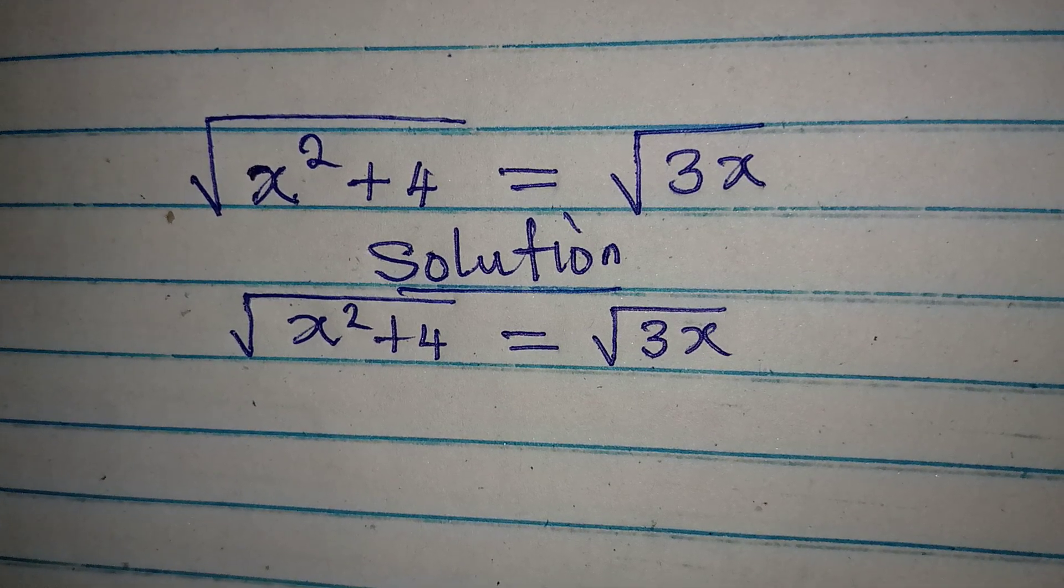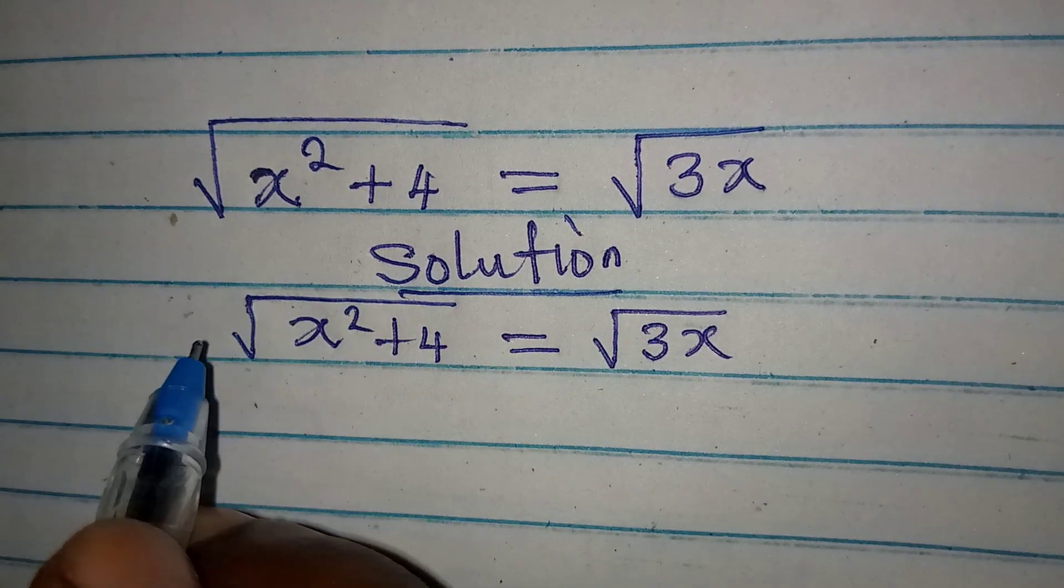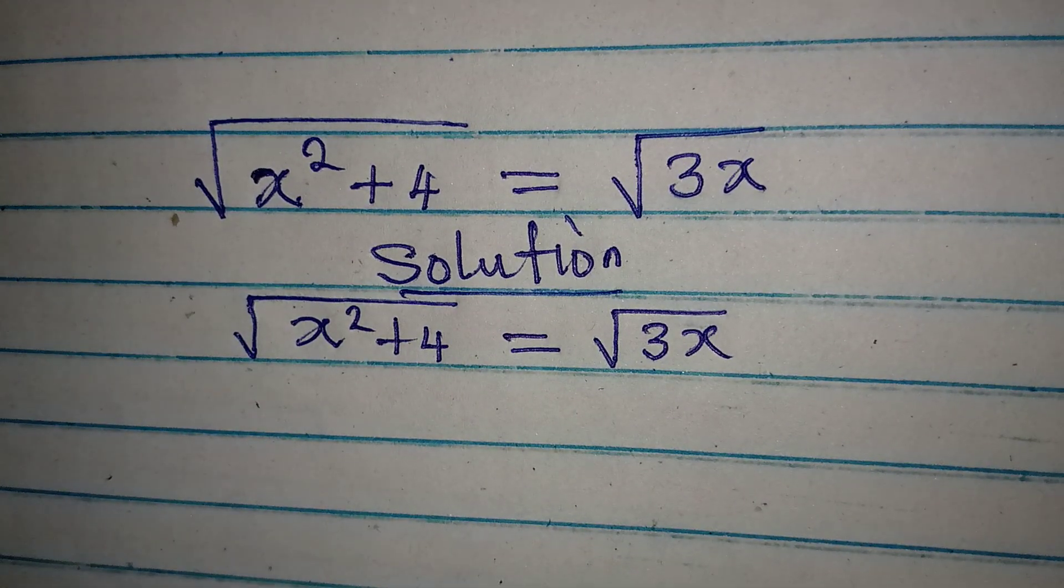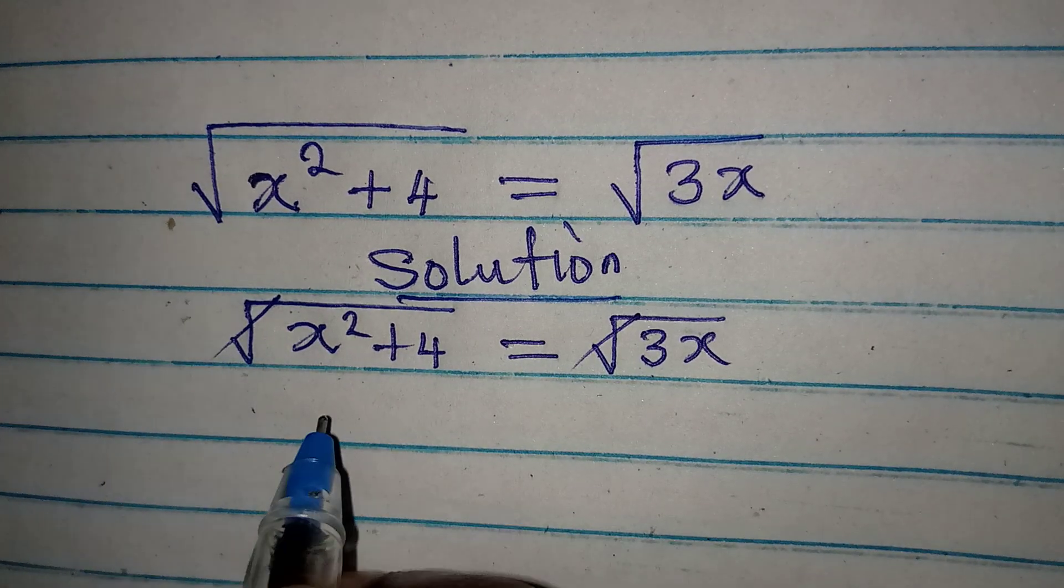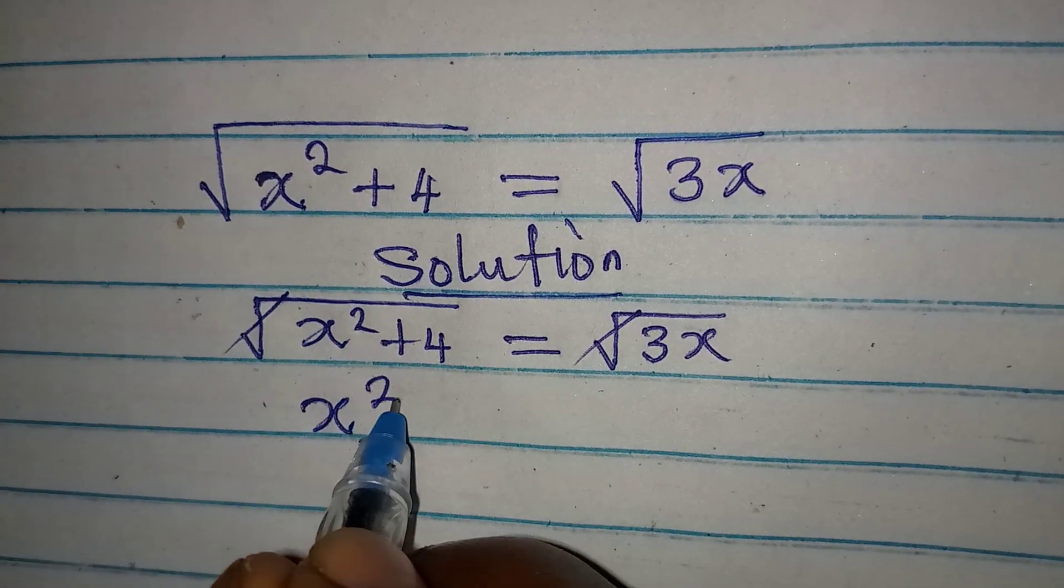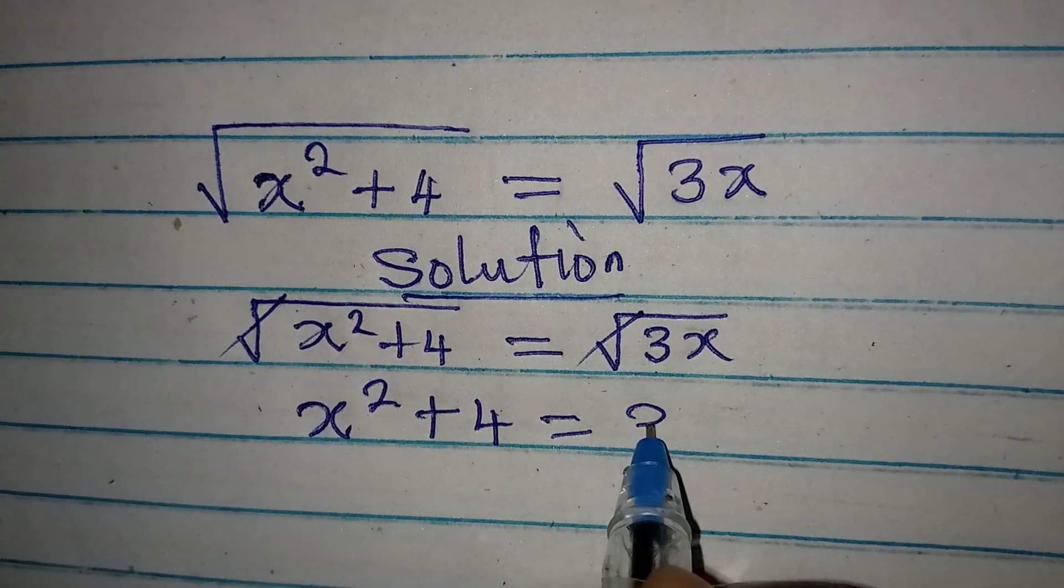Let's deal with this. To deal with this, we can just square both sides. And as we square both sides, this and this will be cancelled. So we have x to the power of 2 plus 4 being equal to 3x.